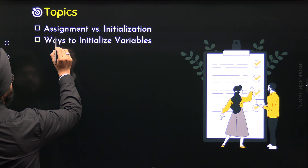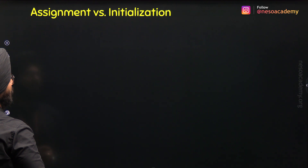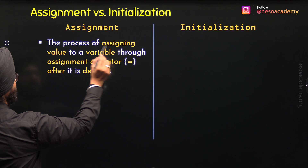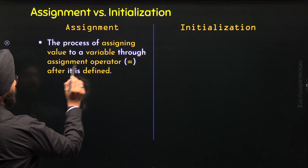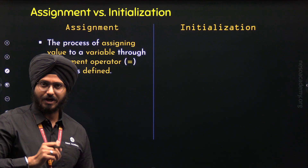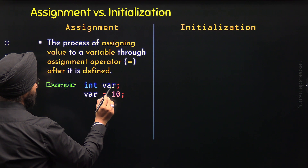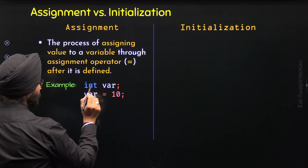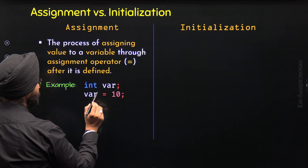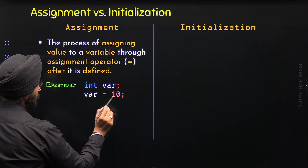Let's understand the difference between Assignment and Initialization. Assignment is the process of assigning value to a variable through the Assignment operator after it is defined. For example, here I have defined this variable var of type int. After definition, I have assigned the value 10 to this variable with the help of the Assignment operator. So this is called Assignment.